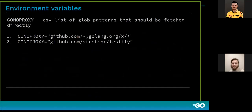There is also the GONOPROXY environment variable. GONOPROXY is a list of wildcards for modules that should be downloaded directly from the version control system. For example, it says: for anything with the prefix github.com, don't use any Go proxy — go directly to github.com and download the code from there. The same works for golang.org/x, so if you see that prefix, go directly to the version control system.